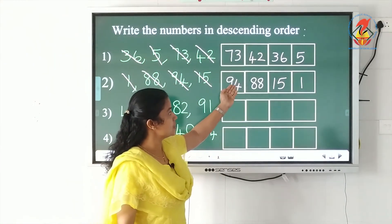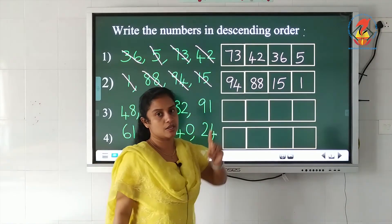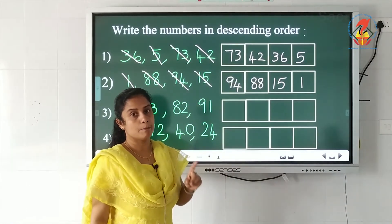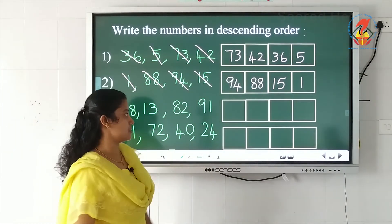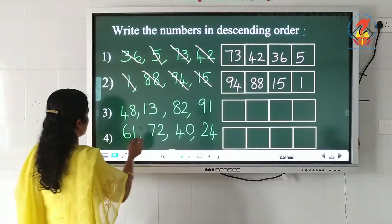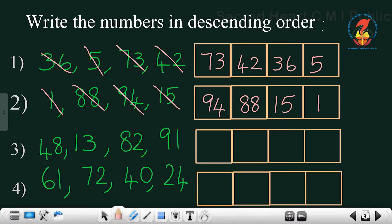So descending order means biggest to the smallest. Now third question.